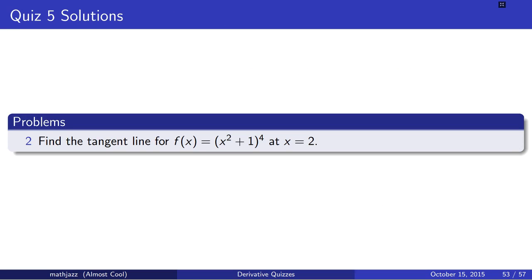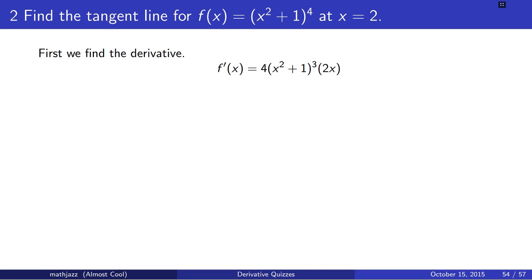Problem 2. Find the tangent line for f of x equals x squared plus 1 to the fourth at the point x equals 2. First, we're going to find the derivative. We do that using the chain rule, and we could set up a chart just like we did for the other three derivatives we found with the chain rule.